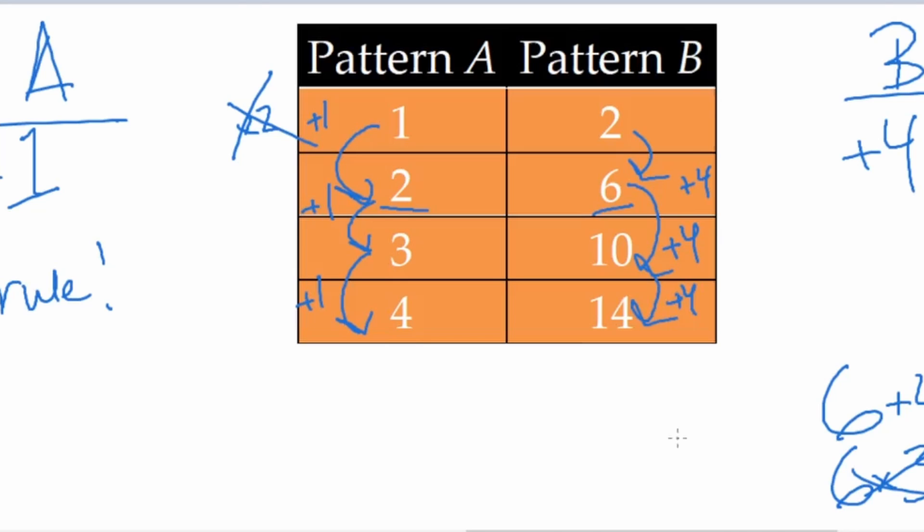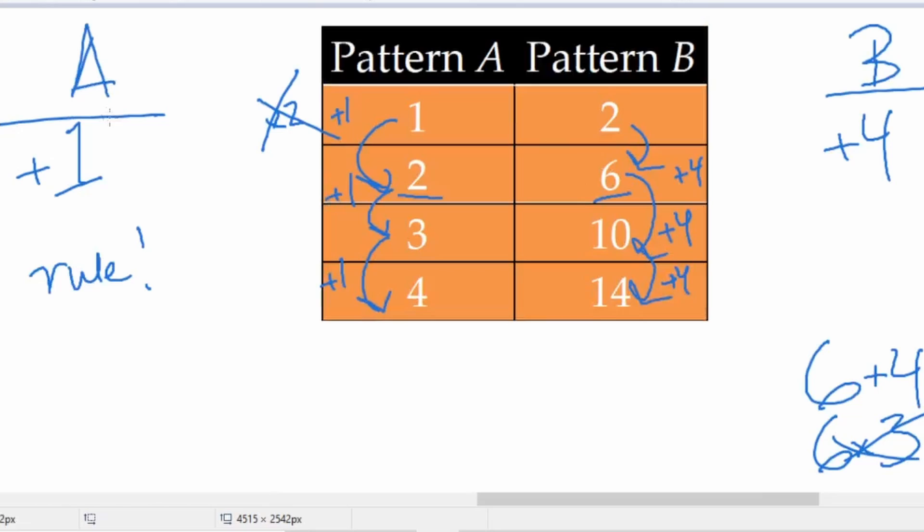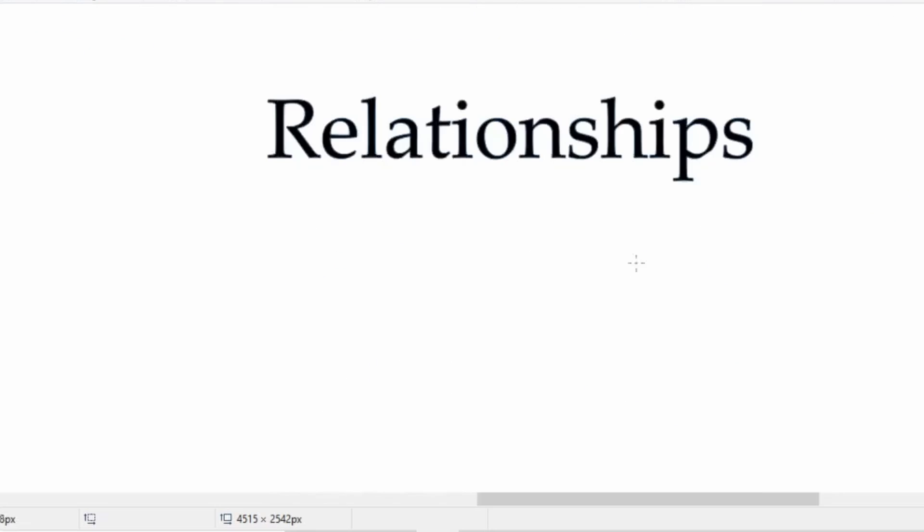Here's the second part. Relationships in math. How are two things related? Let's look at this pattern up here with fresh eyes. Our rule for pattern A is plus one. Pattern B's rule is plus four. So I'm going to write that down here. Pattern A's rule is plus one. Pattern B's rule is plus four. Well, on the relationship, we're looking at how these two are connected. How are they similar?